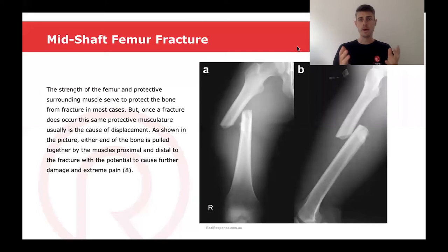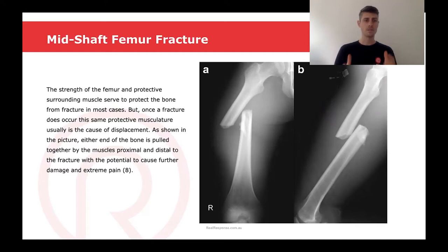We look now at the pathophysiology of mid-shaft femur fractures. Normally, the strength of the femur as well as its surrounding muscles serve to protect the bone from fracture in the majority of cases. However, once the fracture does occur, the same protective musculature is the usual cause of the displacement of the bones.